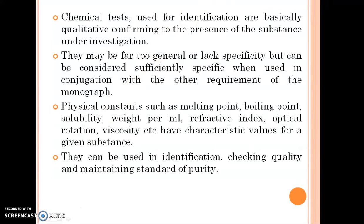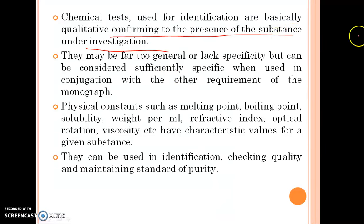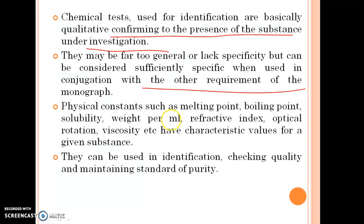Chemical tests used for identification are basically qualitative, confirming the presence of the substance under investigation. They may be too general or lack specificity, but are considered sufficiently specific when used in conjunction with other requirements of the monograph. Physical constants such as melting point, boiling point, solubility, refractive index, etc. have characteristic values for a given substance and can be used in identification, checking quality, and maintaining standards of purity.